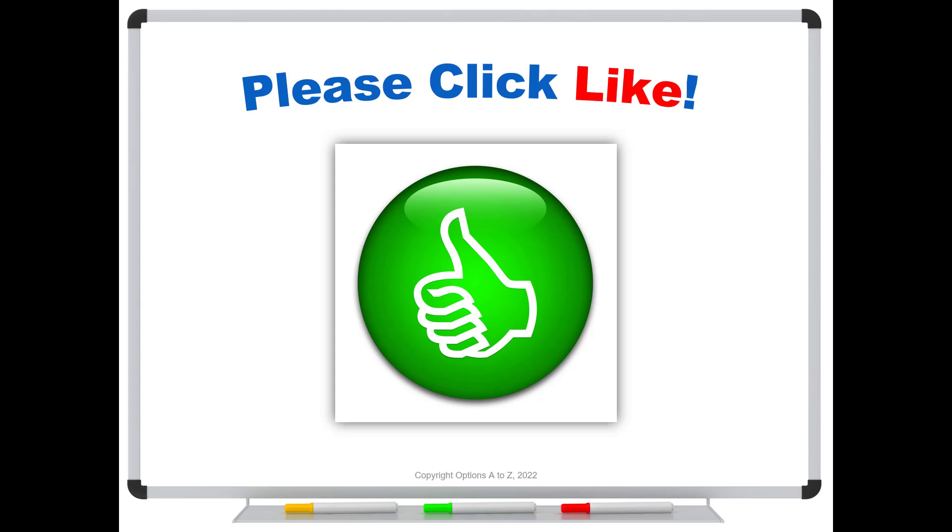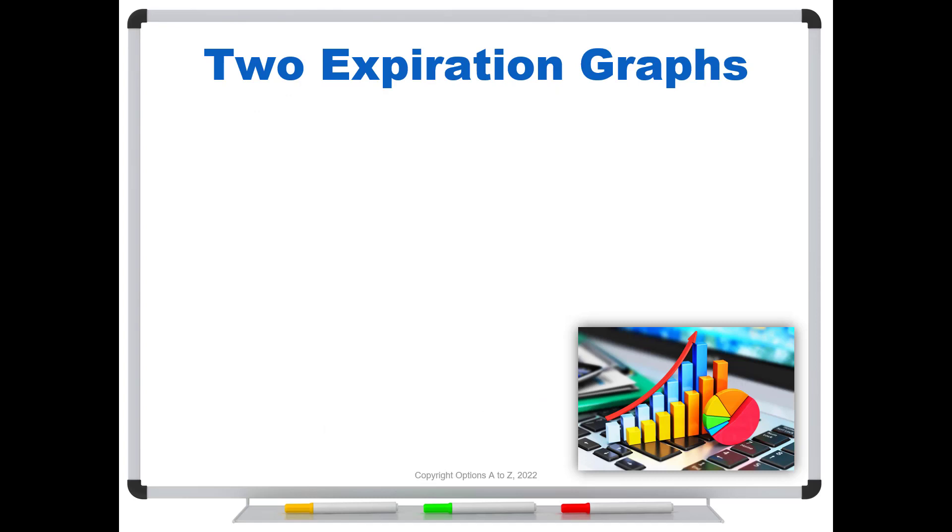The first thing to understand is that when you are dealing with risk graphs or profit and loss diagrams, there are really two of them. A lot of times I don't show them, but there are always two.